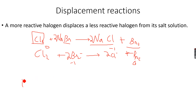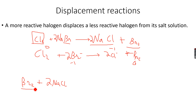However, if we did the opposite — adding Br₂ to NaCl — we would have no reaction, because bromine is a weaker oxidizing agent compared to chlorine. Br₂ would not be powerful enough to oxidize Cl⁻ to Cl₂. So we will have no reaction in this case. A more reactive halogen displaces a less reactive halogen from the salt solution of the less reactive halogen.